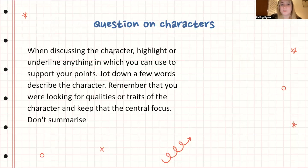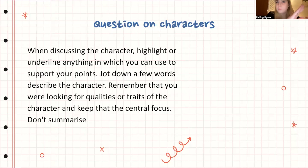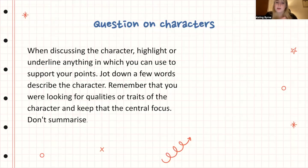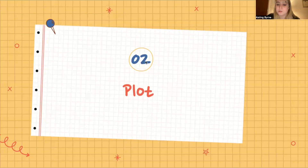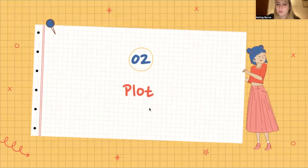When discussing a character, highlight or underline anything in the extract you could use to support your points. Jot down a few words to describe the character in your plan, looking for qualities or traits and keeping that as your central focus. We're not looking at what happened in the story — we're looking at this specific character. Remember, don't summarize; keep the focus on the character.